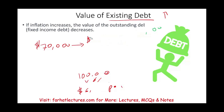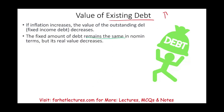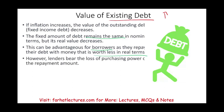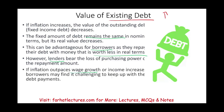So if you have debt, inflation kicks in, and your payment is fixed, you should be in good shape. The fixed amount of debt remains the same in nominal terms, but in real terms it decreases. This can be advantageous to the borrower, as the repayment is worth less in real terms. However, the lenders bear the loss of purchasing power — you're paying them $6,000 when they should be receiving more. But if inflation outpaces wage growth or income increases, it doesn't help, because the assumption is you're getting more nominal money to pay a fixed amount.